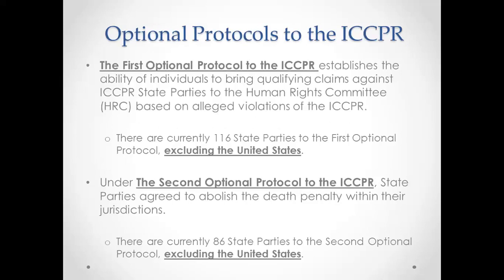Article 27 relates to rights of minorities — particularly ethnic, religious, or linguistic minorities — to enjoy their own culture, profess and practice their own religion, or use their own language. After the ICCPR went into effect in 1976, a movement emerged to push for abolition of the death penalty and create a mechanism where the Human Rights Committee could hear individual complaints about ICCPR violations. The first optional protocol establishes this ability for individuals to bring claims against their own country after exhausting domestic remedies.